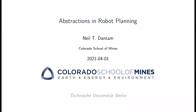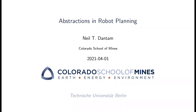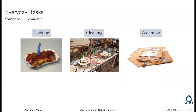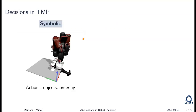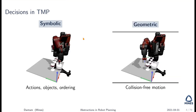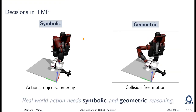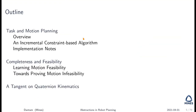Thank you for the invitation. Today I'll talk about abstractions in robot planning. We're motivated by robots that help us with everyday tasks — cooking, doing dishes, assembling furniture. These tasks combine both symbolic and geometric decisions: symbolic decisions about actions, objects, and ordering, and geometric decisions about collision-free motion. For real-world action, we really need both kinds of reasoning.